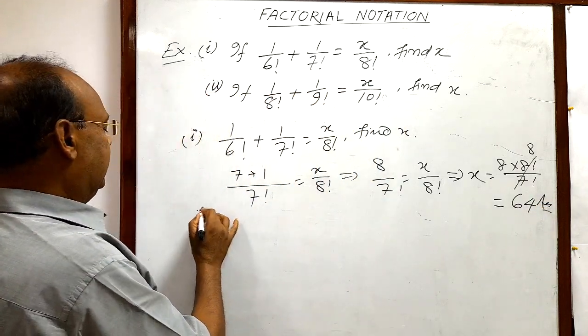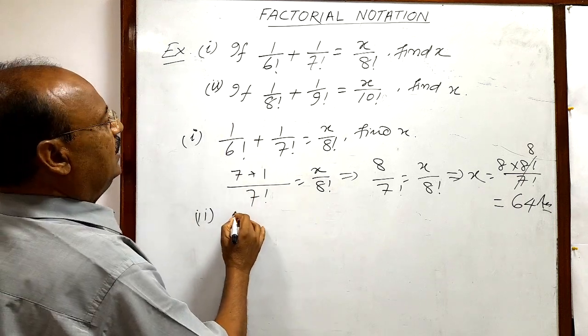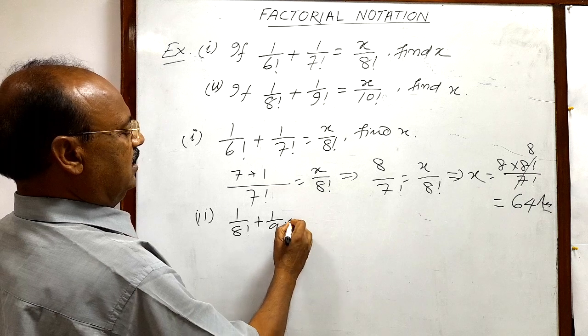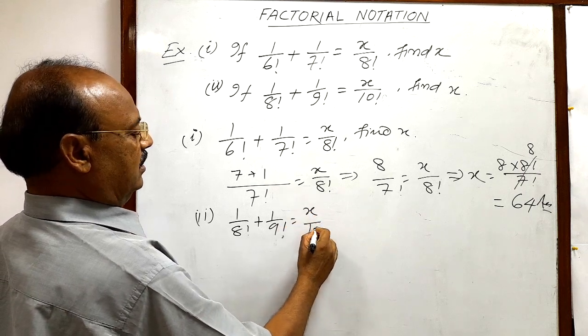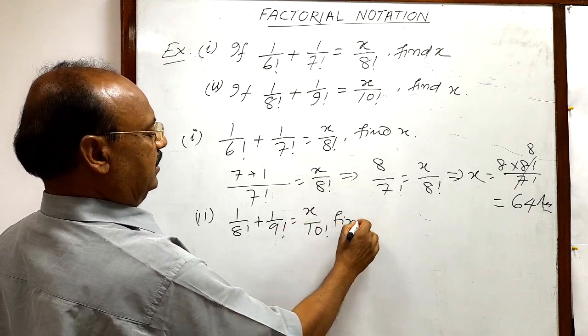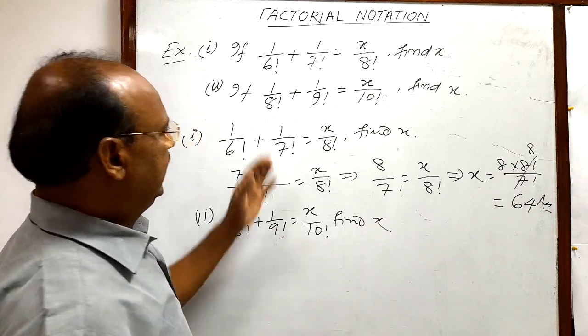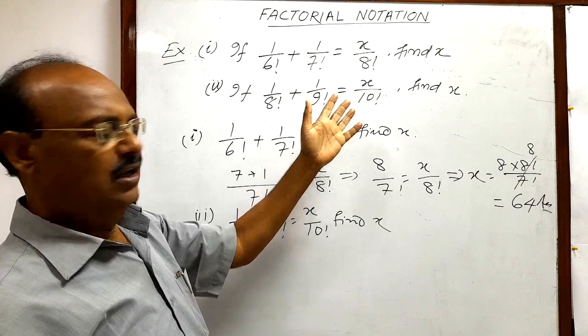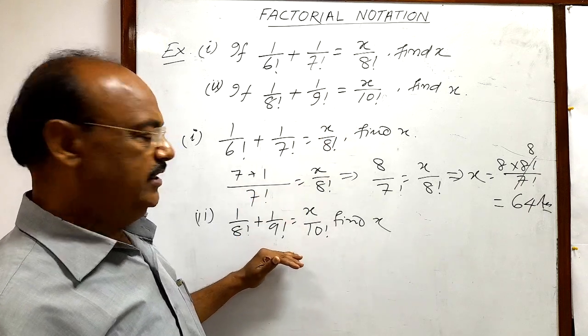Now let us see the second equation. Here given 1 by 8 factorial plus 1 by 9 factorial is equal to x by 10 factorial, we have to find the value of x. Pattern of both the equations are exactly similar, only difference of numbers is here. So we can do this equation very easily now.